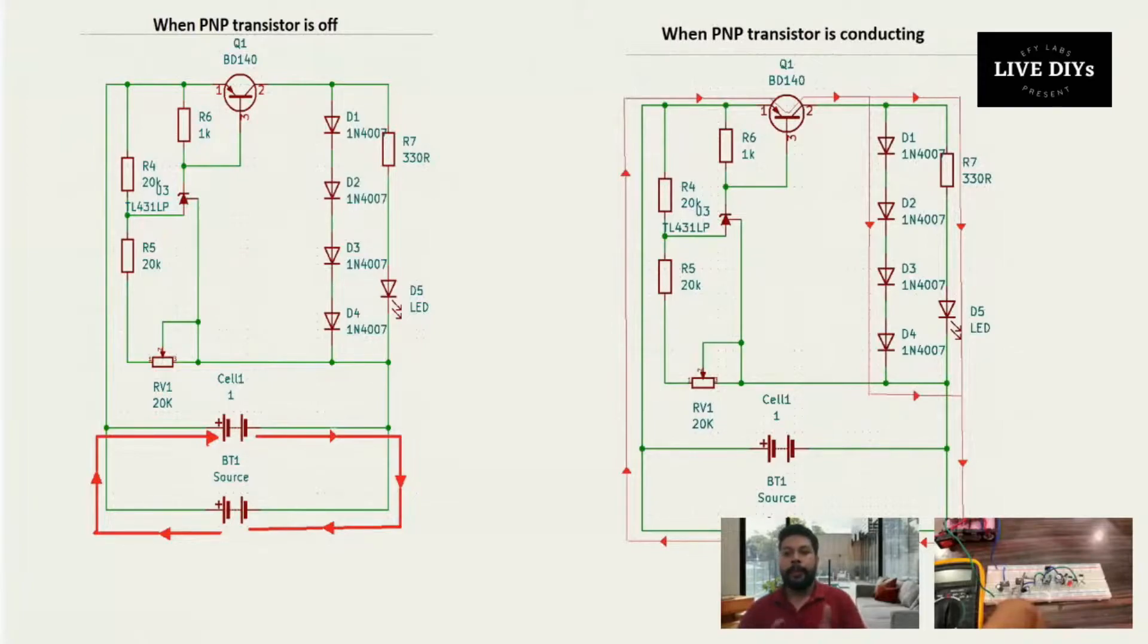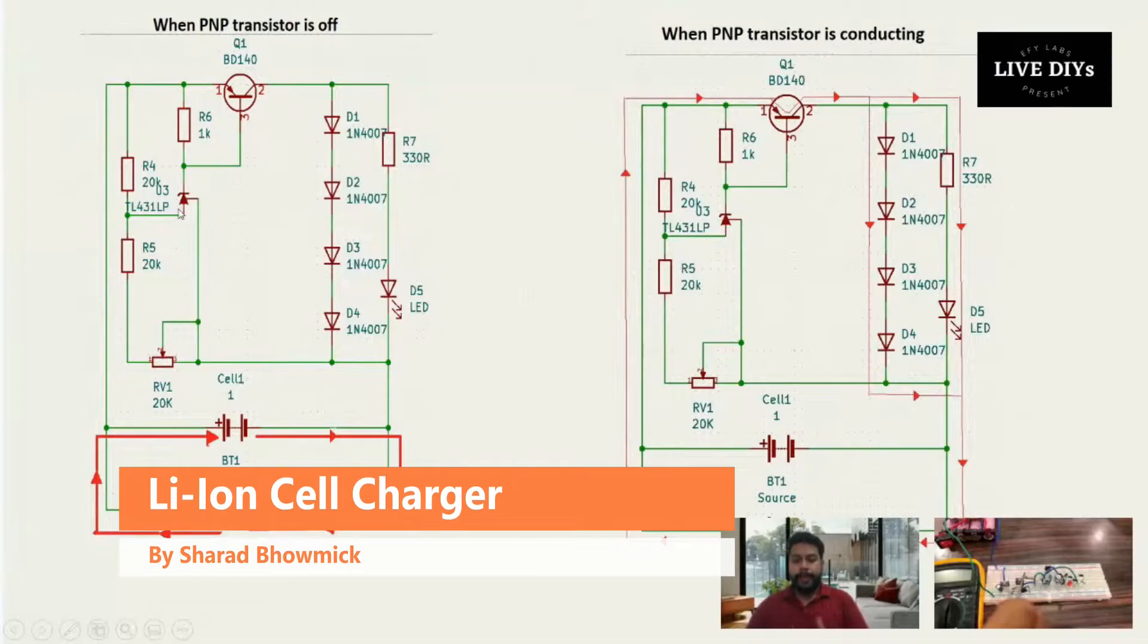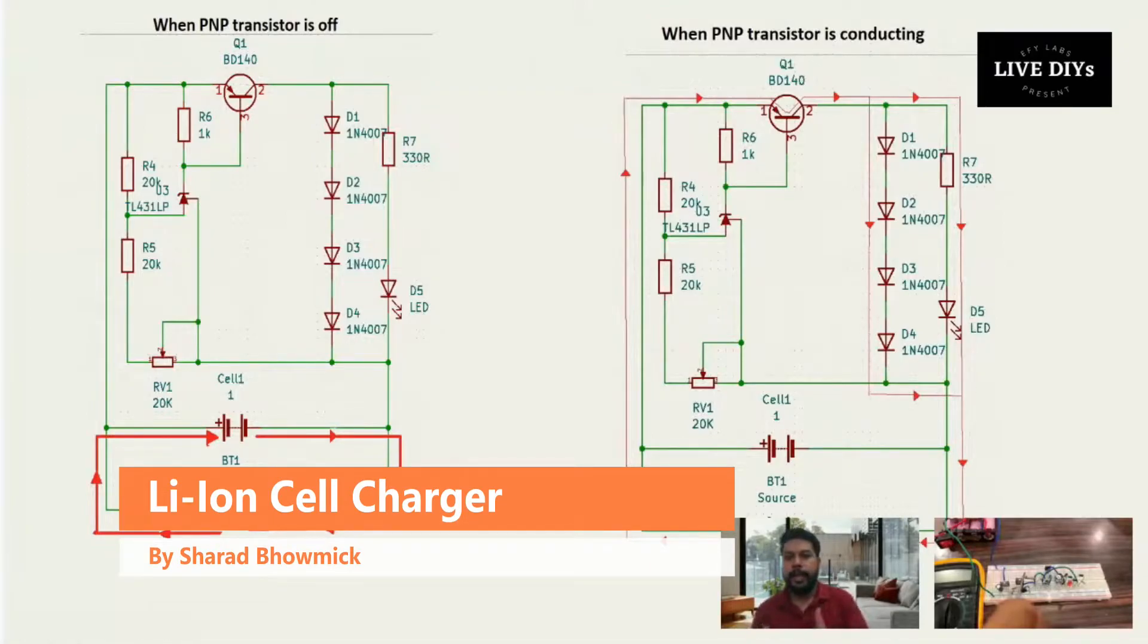In parallel to that we have an LED D5 connected in series with a 330 ohm resistance to show when our battery is fully charged. From the base of the BD140 we have a zener adjustable diode, that is TL431. We have connected that in such a way that it is an adjustable reference voltage in the closed position like a circle, and we can basically set the operating value.